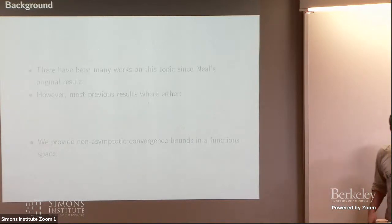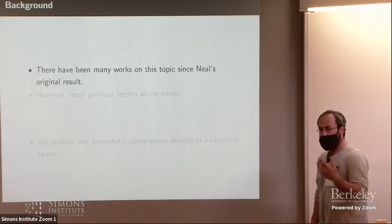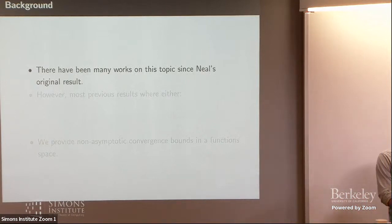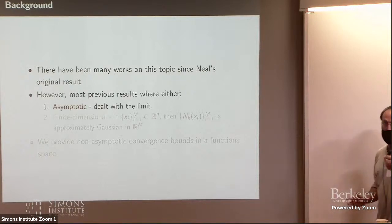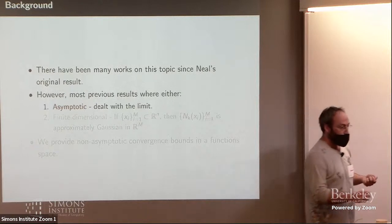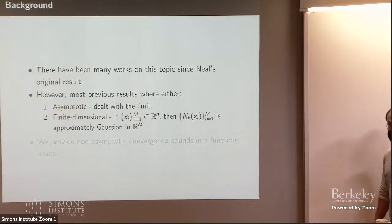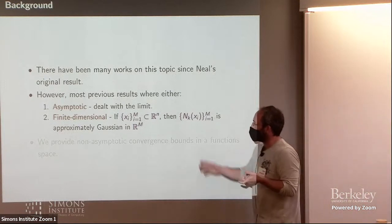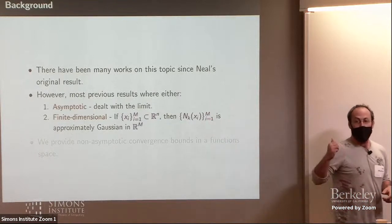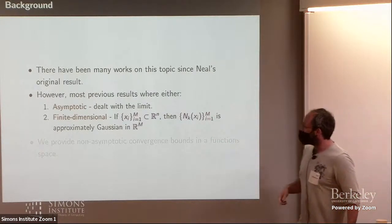And since the 90s, there have been many subsequent works, generalizing it to different architectures and with different metrics. But almost all of those results can be classified into two sets of results. Either they were asymptotic, so they only said something about the existence of the limit, or they were finite dimensional results.